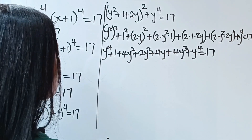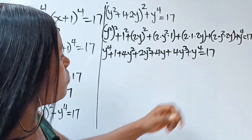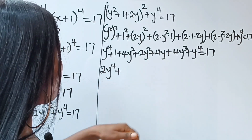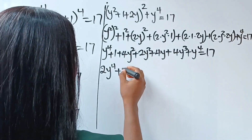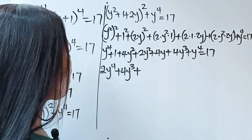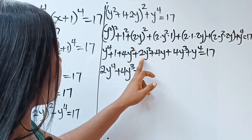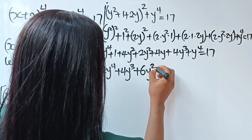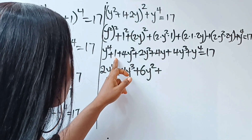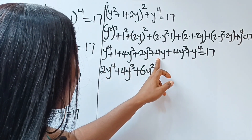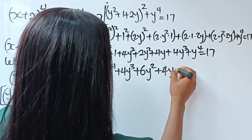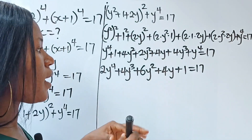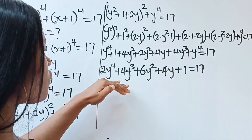Collecting like terms: two y to the power of 4 terms combine to give 2y^4; we have 4y^3; then 4y squared plus 2y squared gives 6y squared; plus 4y; plus 1 equals 17. This is our expanded equation, and we need to factorize it — we'll need a linear equation and a cubic polynomial.